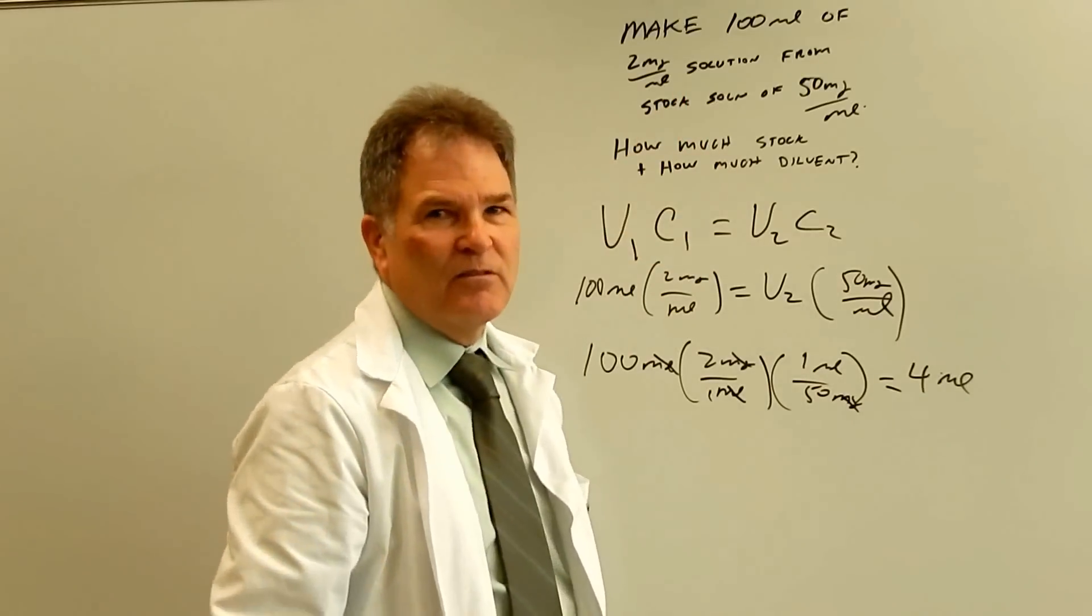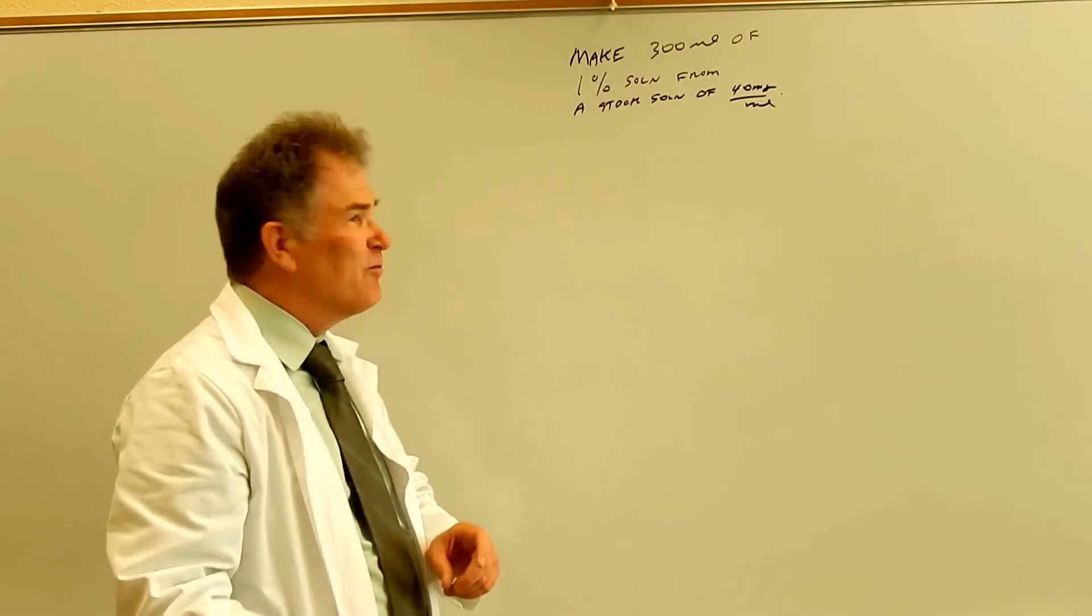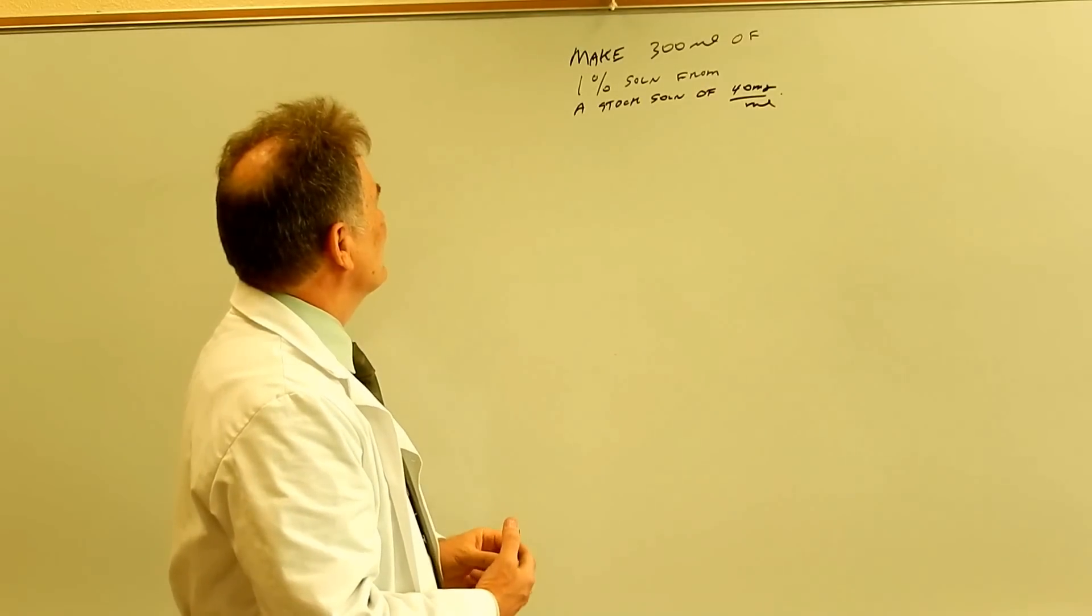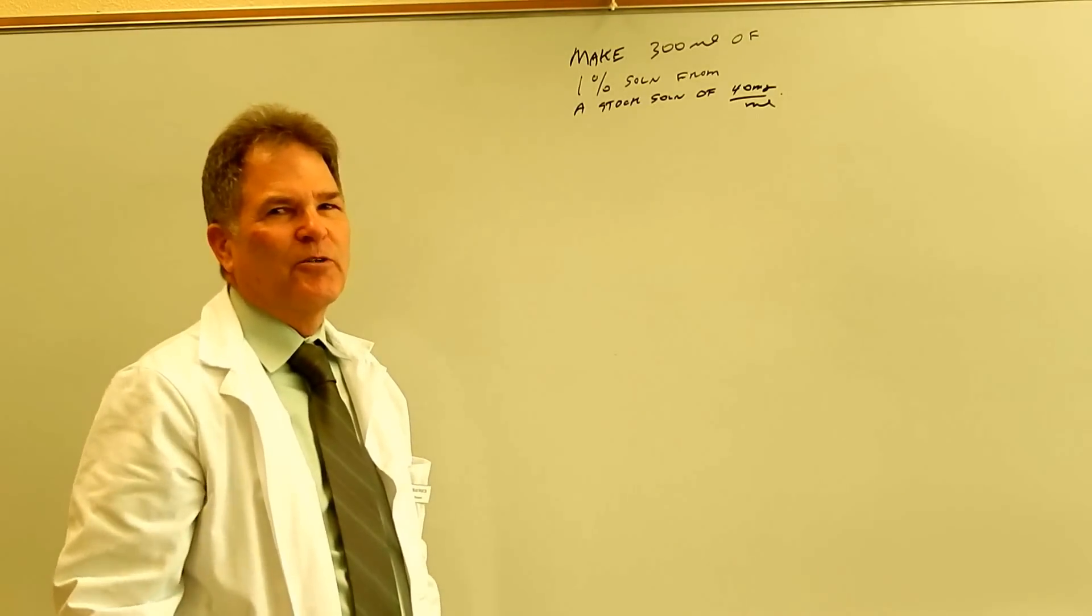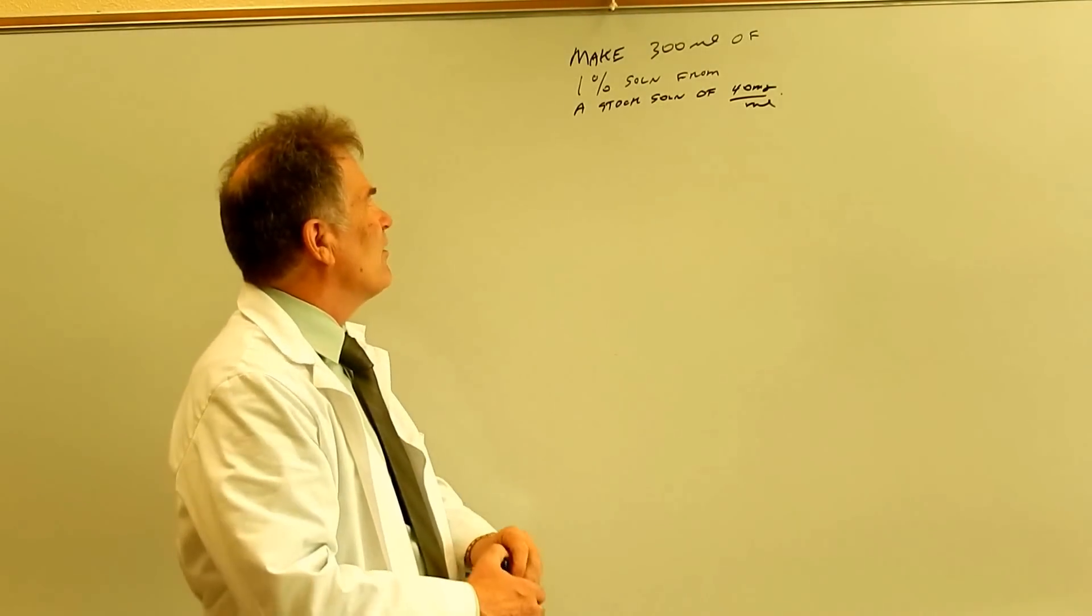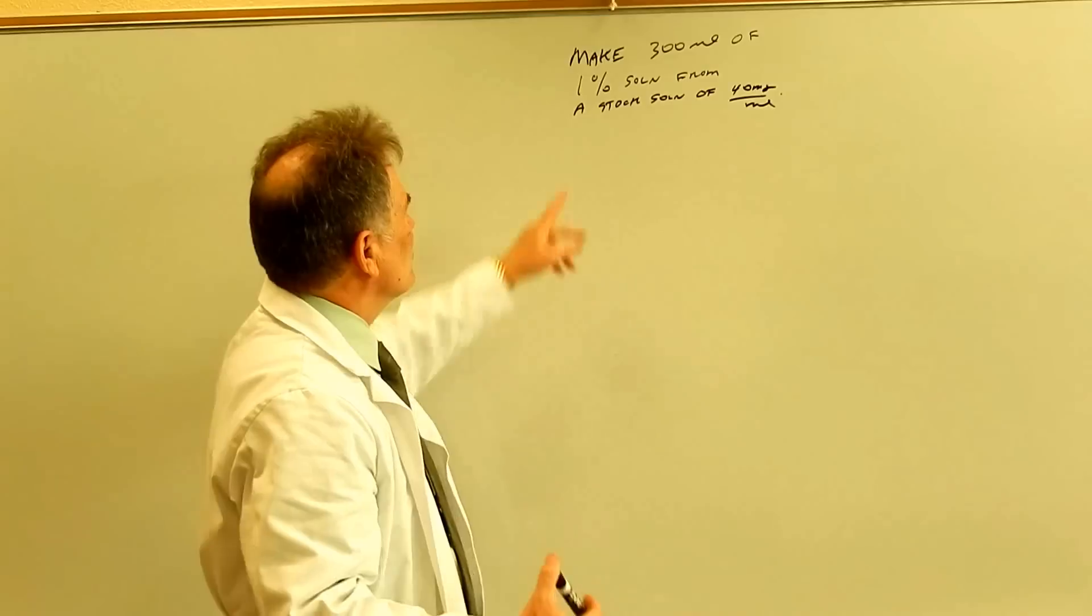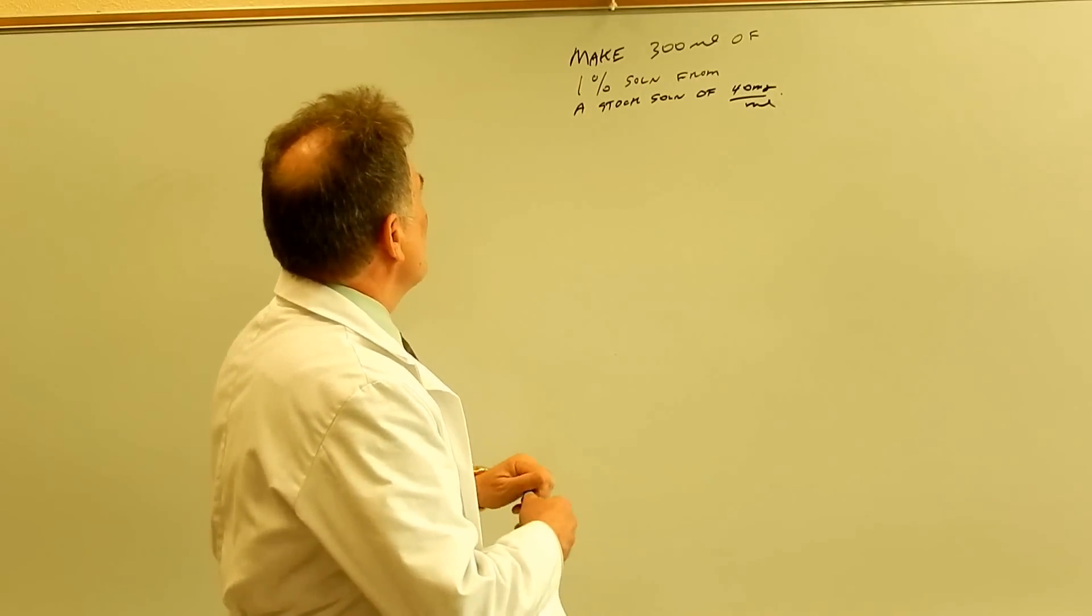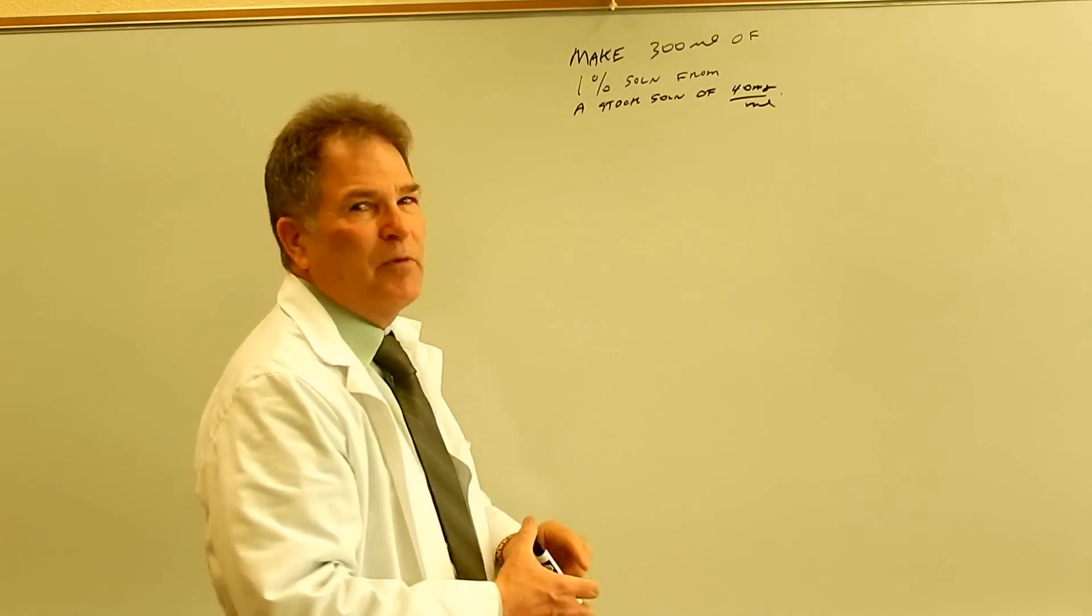So it's a good formula to know. If you don't want to use a formula, you can always just figure it out. Alright, so I threw a little bit of a curve ball in here. So we're going to make 300 ml of a 1% solution from a stock solution of 40 mg per ml. Now, once again, there's two different ways we can do this. We can figure out how many milligrams we're going to need. And then we're going to figure out how many ml of the stock solution we need to get our milligrams.